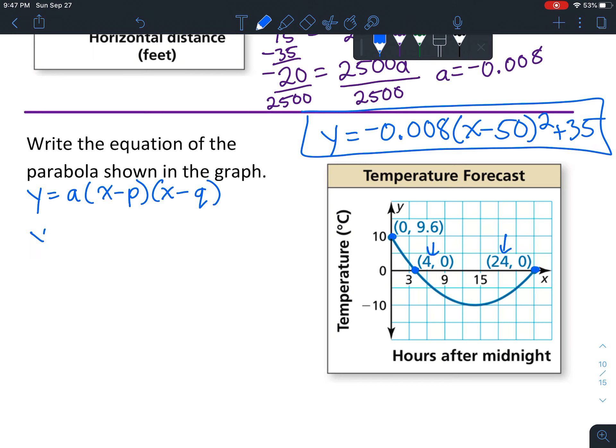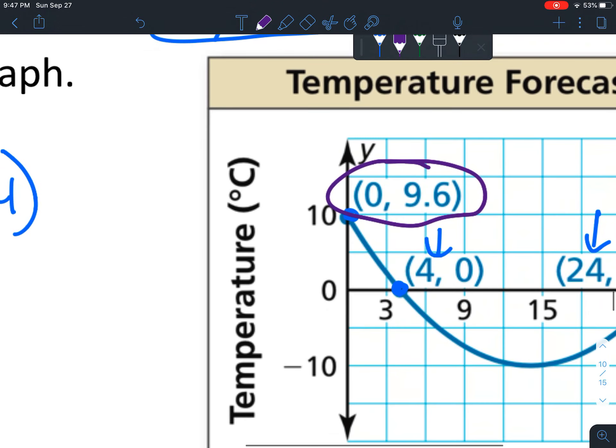We'll plug those in right away. We've got y = a(x - 4)(x - 24). It doesn't matter which one you put where.